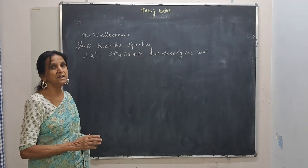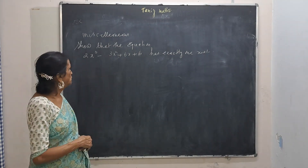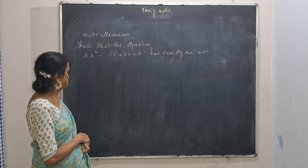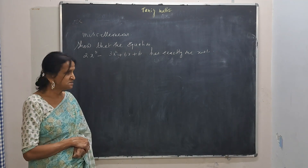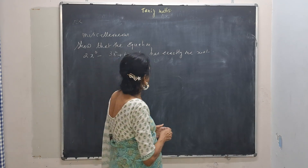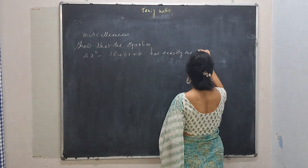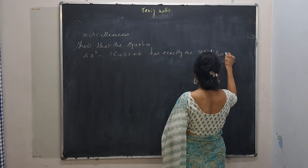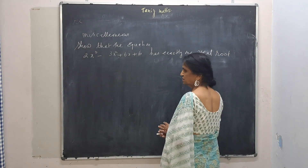Show the equation: 2x cubed minus 3x squared plus 6x plus 6 has exactly one real root. It should have one real root. It is a cubic.